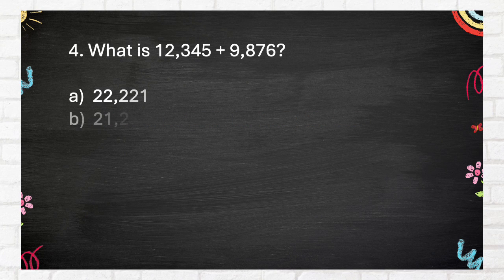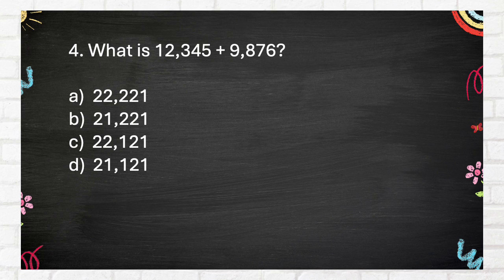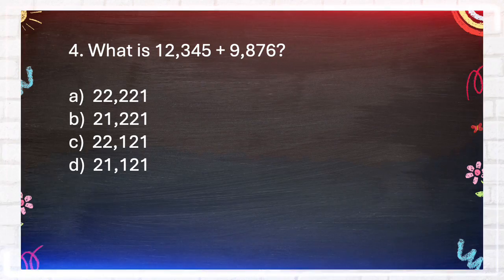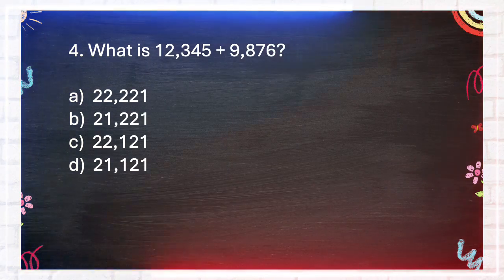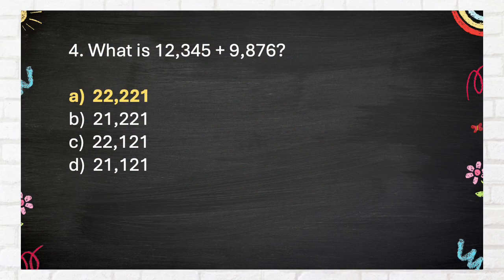Question number 4. What is 12,345 plus 9,876? A. 22,221, B. 21,221, C. 22,121, D. 21,121. The answer is A. 22,221.